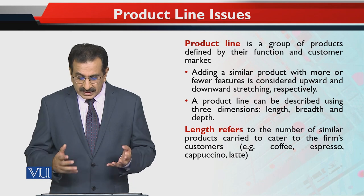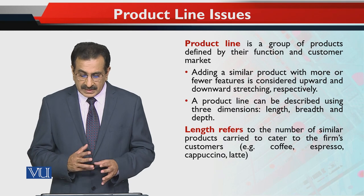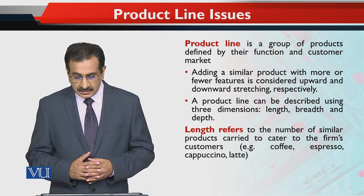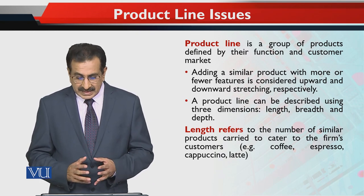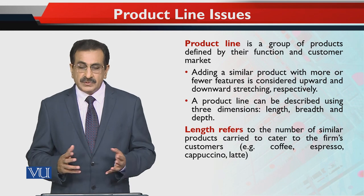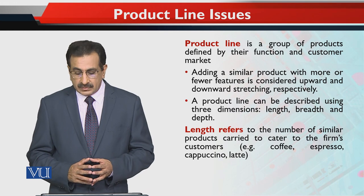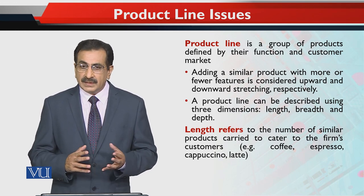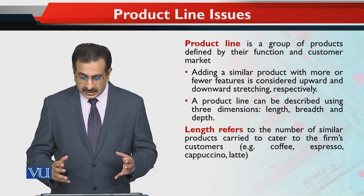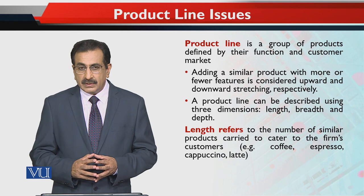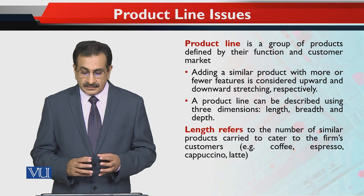A product line can be described using three dimensions: length, breadth, and depth. Length refers to the number of similar products carried to cater to the firm's customers. For example, if you go to a coffee shop, you can get an espresso, a cappuccino, a latte — that range of coffee types is the length of the product line.